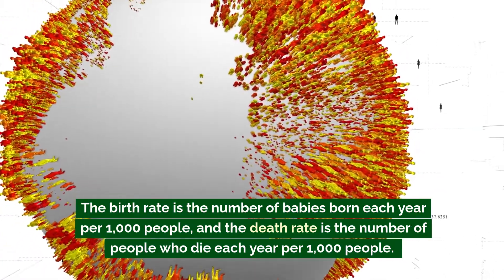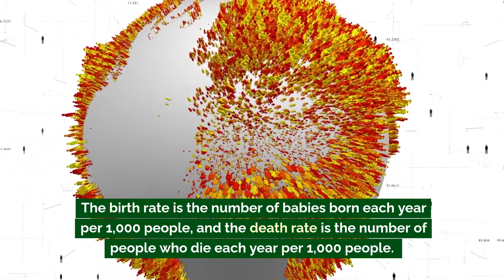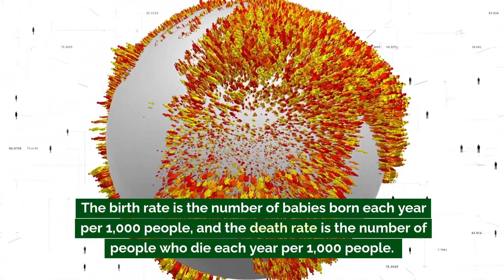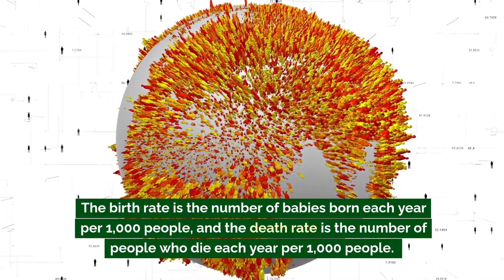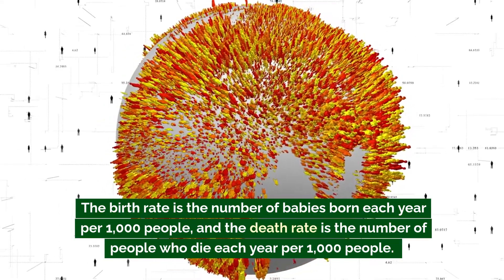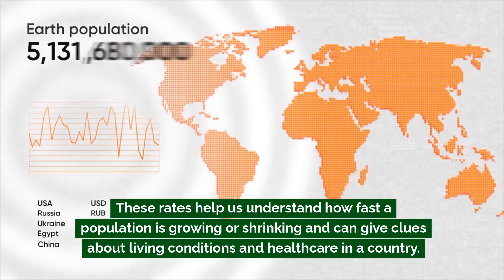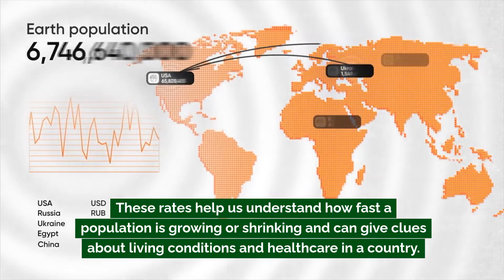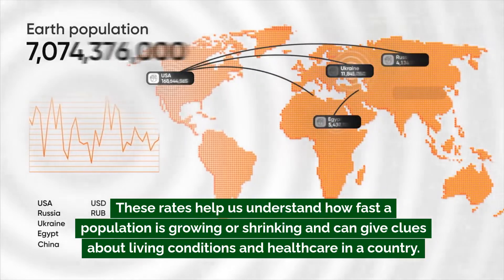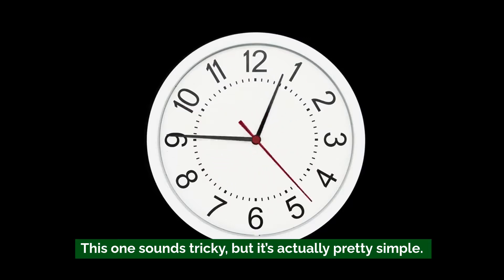Birth rate and death rate are two more important indicators. The birth rate is the number of babies born each year per one thousand people, and the death rate is the number of people who die each year per one thousand people. These rates help us understand how fast a population is growing or shrinking, and can give clues about living conditions and health care in a country.